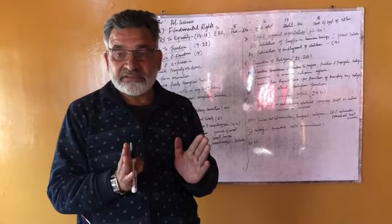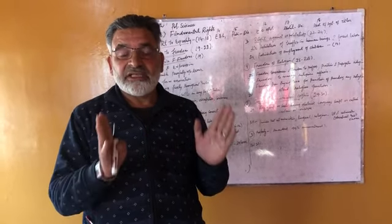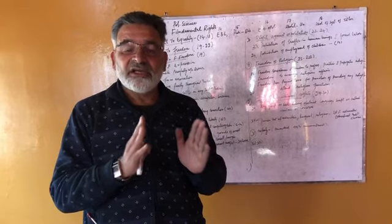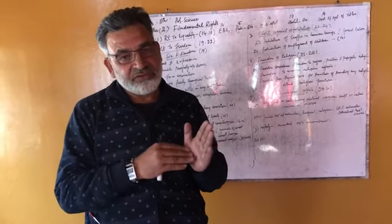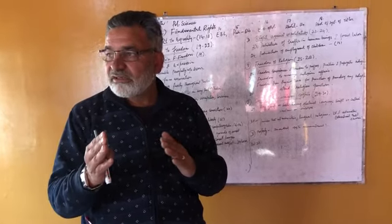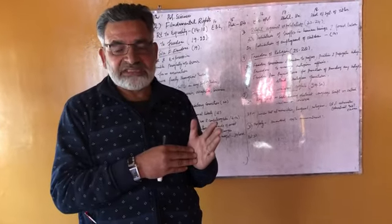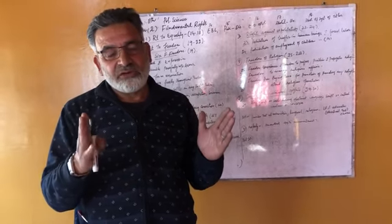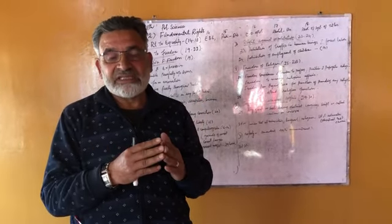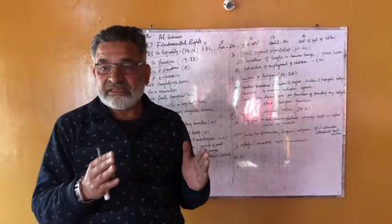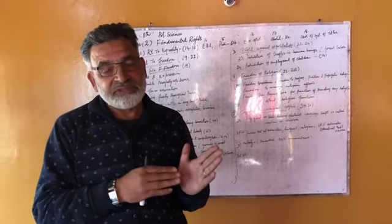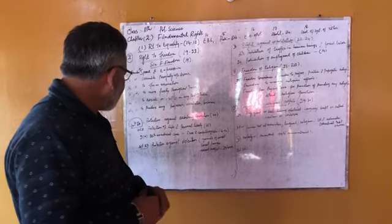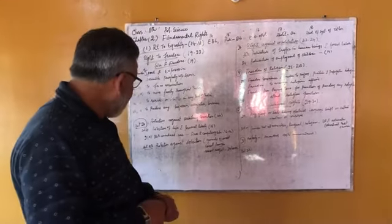Under Article 21A, which was added by the 86th Constitutional Amendment in 2002, it was made compulsory that children in the age group of 6 to 14 can get education free of cost. By virtue of that we have schemes like the Mid-Day Meal (MDM) scheme, free textbooks, and free uniforms for all students in the age group of 6 to 14 under free and compulsory education.